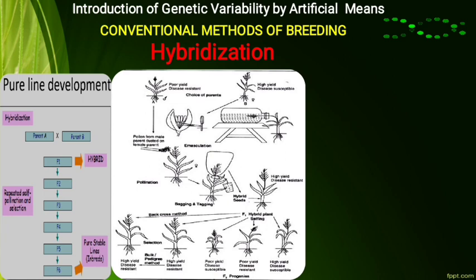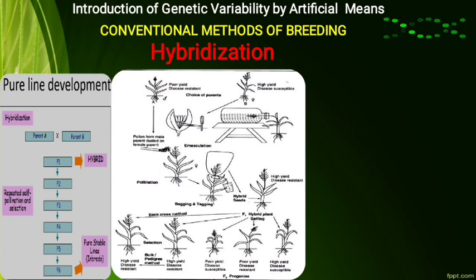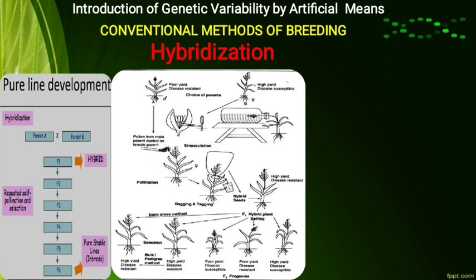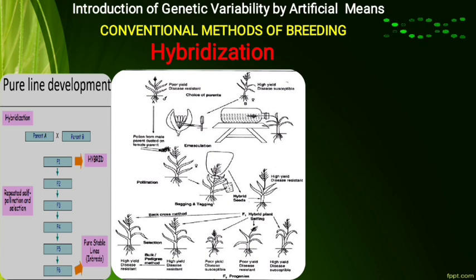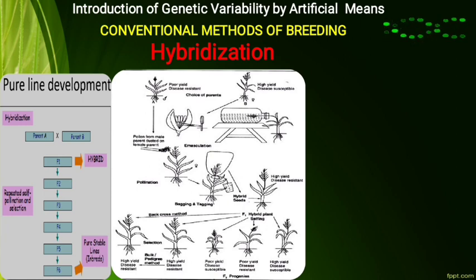The steps involved in hybridization: the first step is the choice of the plant. We have to choose the parents involved in the crosses, and they should be well adapted to that environment. Whichever plant we choose should be well adapted, while one of them may not be adapted to that environment. Then comes the evaluation of the parents, which means assessing the performance of the parents — that is, when they are crossed, the performance of the parents in that particular area has to be evaluated.